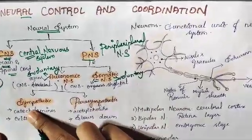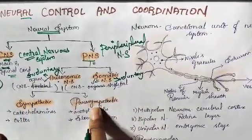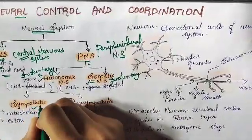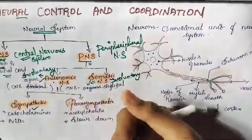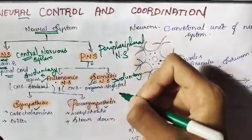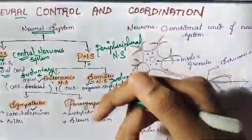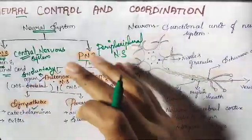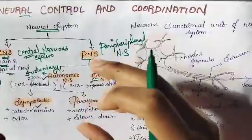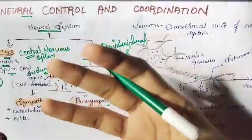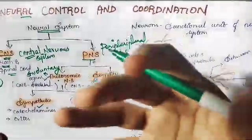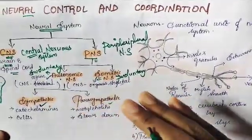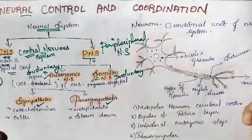The autonomic nervous system is divided into the sympathetic and parasympathetic nervous system. In most cases, the sympathetic nervous system excites the muscles and the parasympathetic nervous system slows things down. For example, in the heart, the pressure is created by the sympathetic nervous system and the control is exerted by the parasympathetic nervous system.